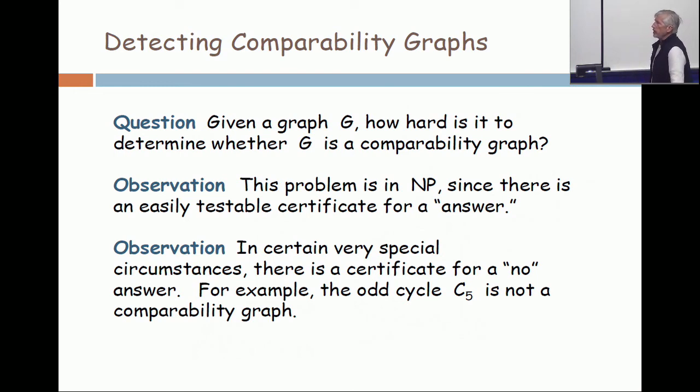In certain very special cases, there's a certificate for a no answer. For example, the odd cycle C5 is not a comparability graph.